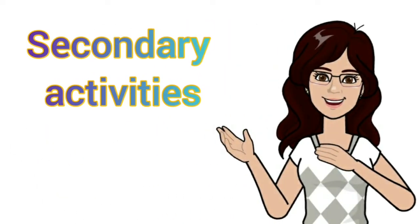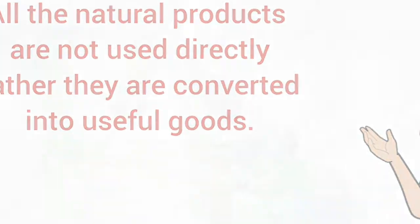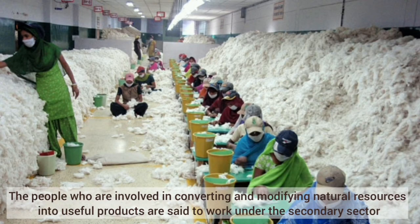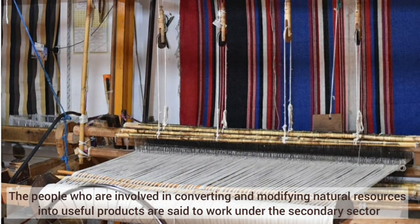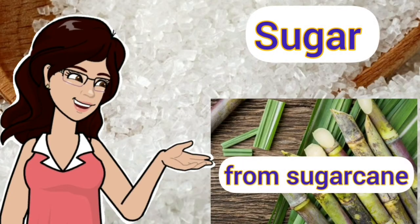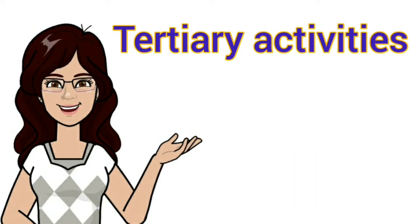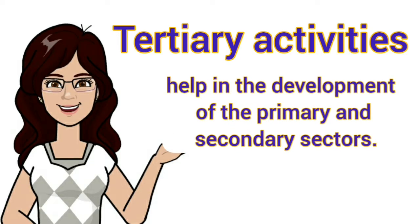Now come to secondary activities. There are a number of things that are taken out from nature, but all natural products are not used directly. Rather, they are converted into useful goods. The people who are involved in converting and modifying natural resources into useful products are said to work under the secondary sector, and their work is called secondary activities. For example, manufacturing of cloth from cotton, sugar from sugarcane, and steel from iron ore.